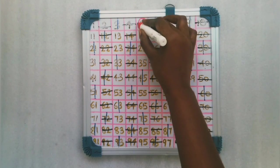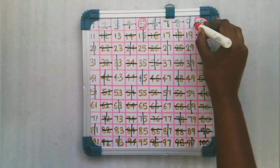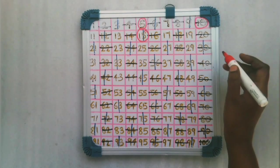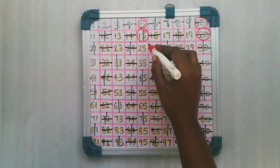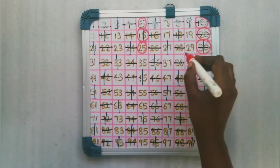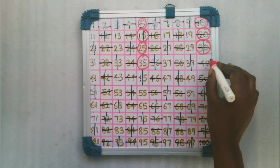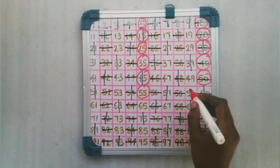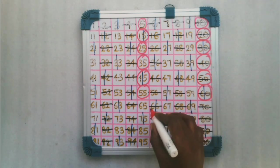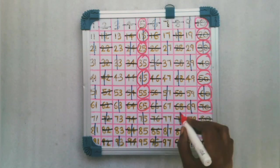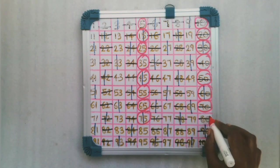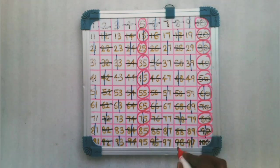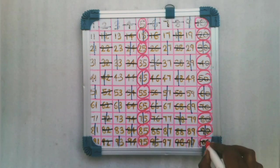The multiples of 5 up to 100 are: 5, 10, 15, 20, 25, 30, 35, 40, 45, 50, 55, 60, 65, 70, 75, 80, 85, 90, 95, 100. We draw a circle for each of these with red color.